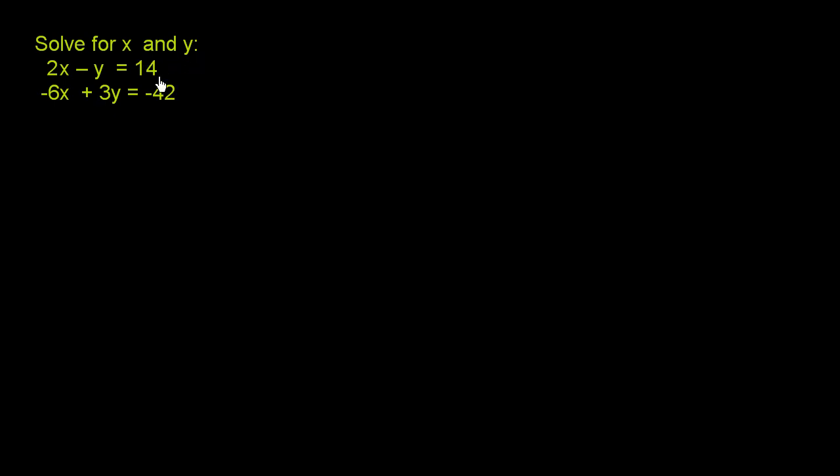Solve for x and y. We have the system of equations right here. We have 2x minus y is equal to 14, and negative 6x plus 3y is equal to negative 42.